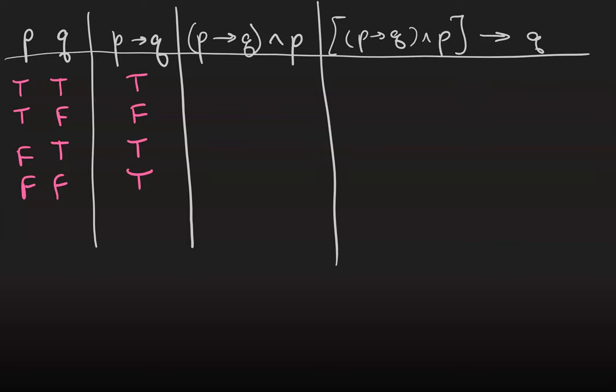And now we're going to take this conditional statement and conjoin it with p. So we're looking for the rows where if p then q and p are both true at the same time. So that's going to be this first row here. And then otherwise they're not both true at the same time, so it's going to be false, false, false.